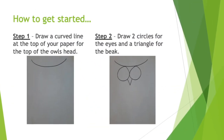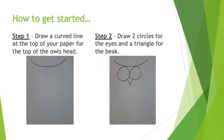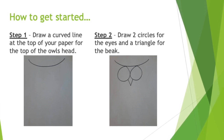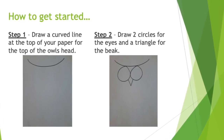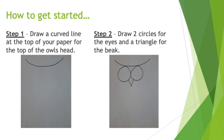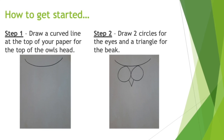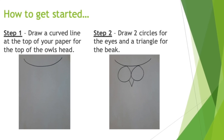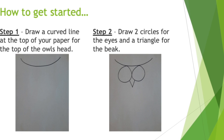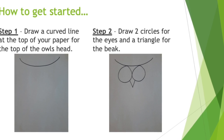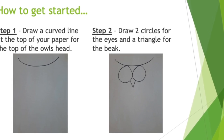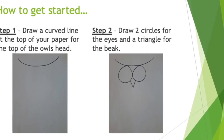Now let's get started. First, you're going to draw a curved line at the top of your paper — make it big. This is the top of your owl's head. Next, you're going to draw two circles for the eyes and a triangle for the beak.